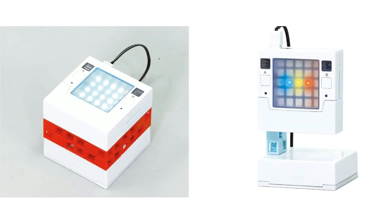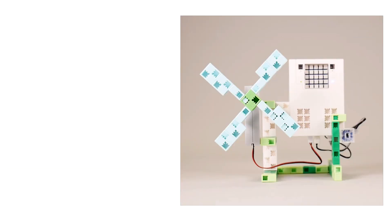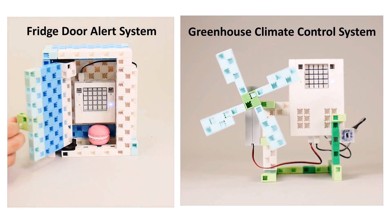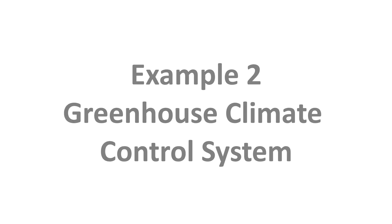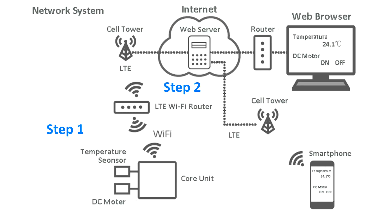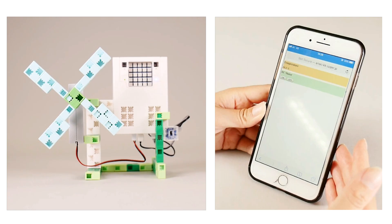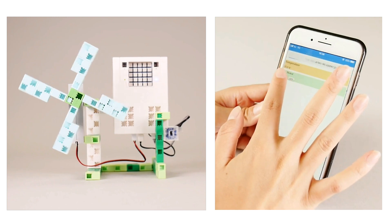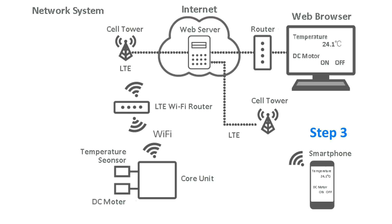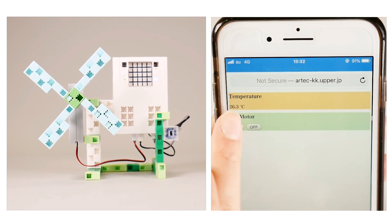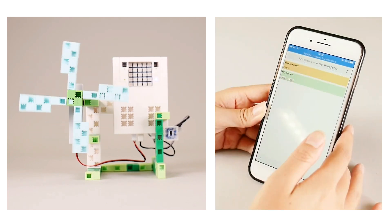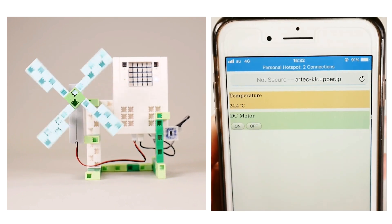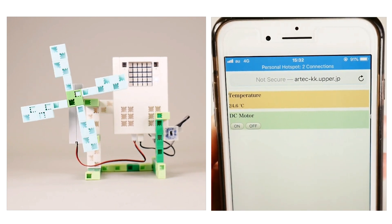One way to utilize the IoT capabilities of the core unit would be through creating a variety of monitoring systems. Another example of a monitoring system that uses the core unit would be a temperature sensor connected to a wireless network, allowing you to check the temperature of the room from a remote device and turn the fan on or off to regulate it. A remote climate control system like this one turns your farm or garden into a smart one.